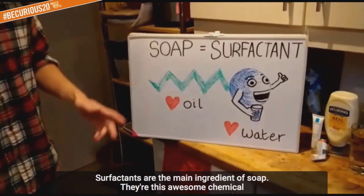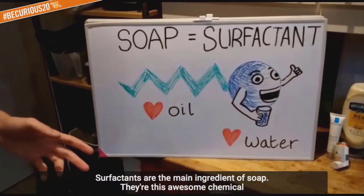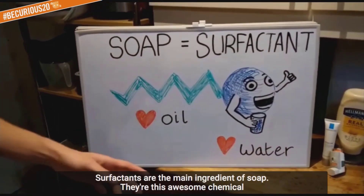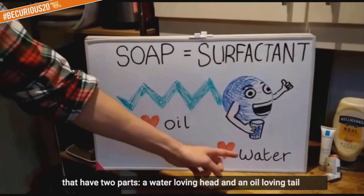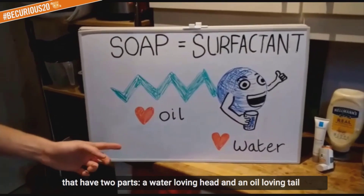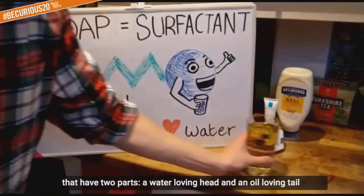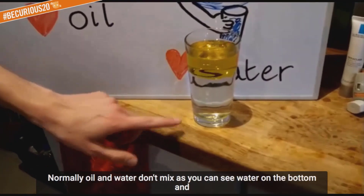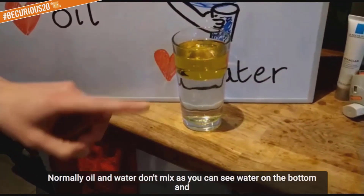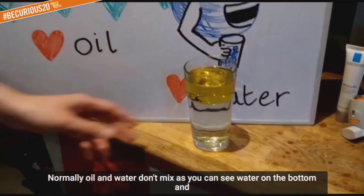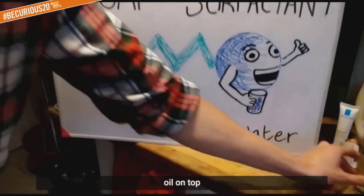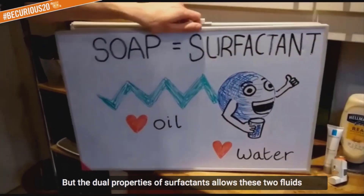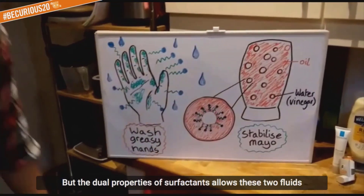Surfactants are the main ingredient of soap and they're this awesome chemical where they've got two parts: a water-loving head and an oil-loving tail. Normally oil and water don't mix — as you can see, water on the bottom and oil on top — but the dual properties of surfactants allows these two fluids to mix.